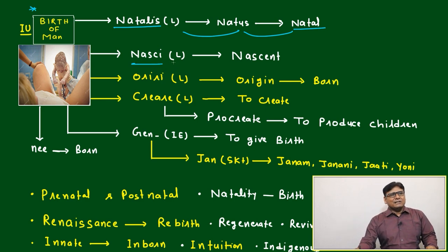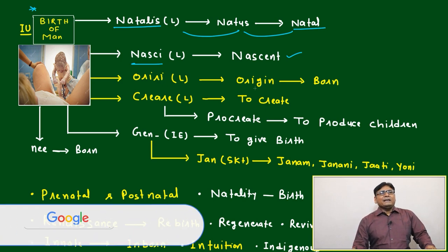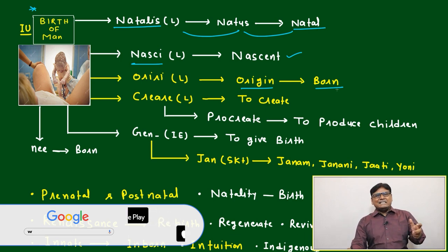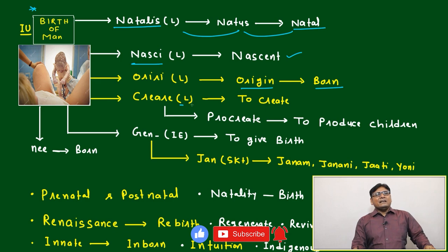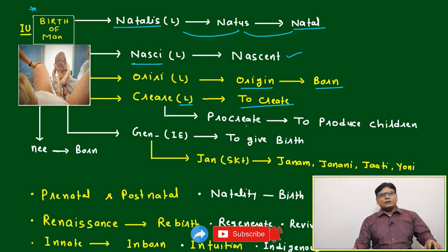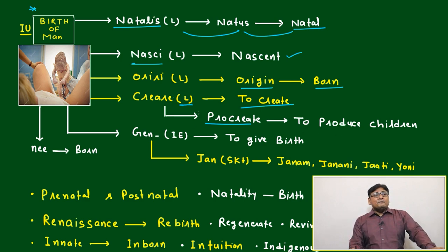The Latin word 'nasci', based on that we get 'nascent'. After that, 'oriri' — based on that, origin. Origin means just born, journey started, initiated. After that, 'creare', another Latin root meaning to create. From this word only, we get create, creation, procreate — all the words have come from this Latin root.